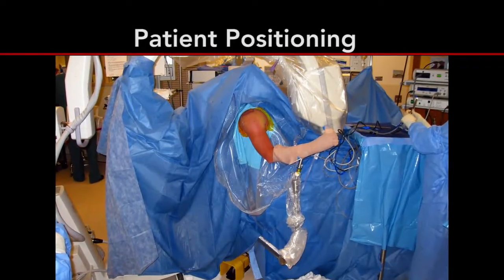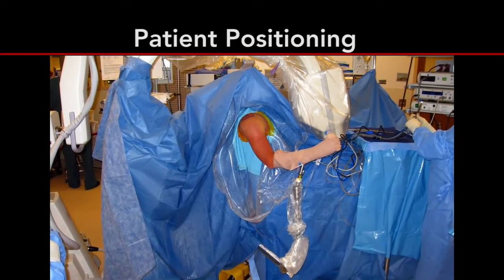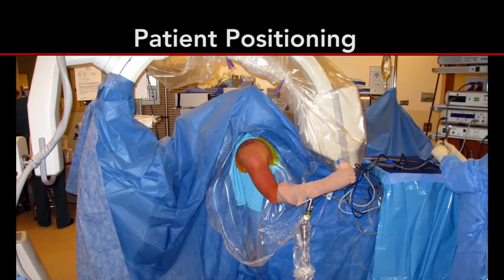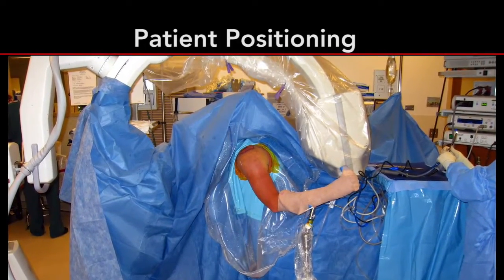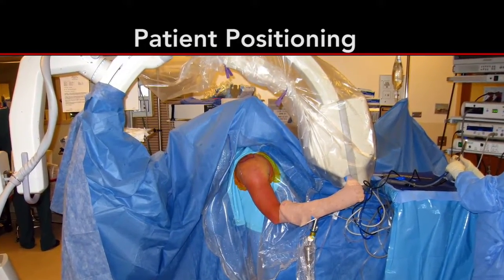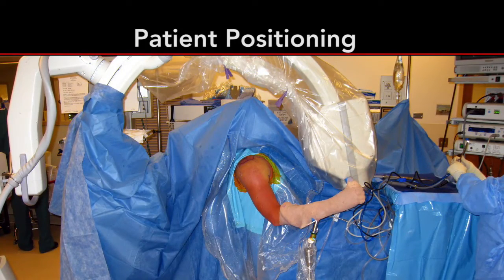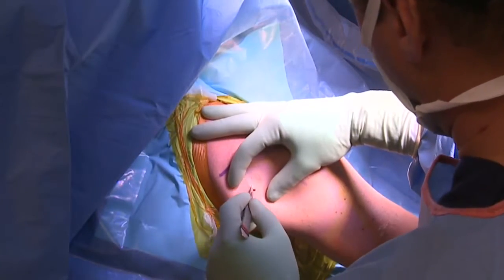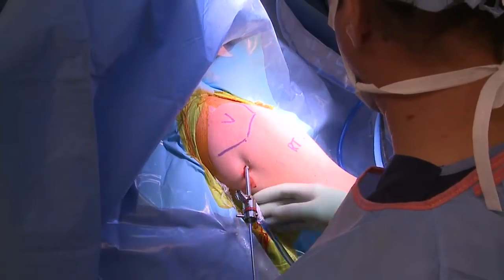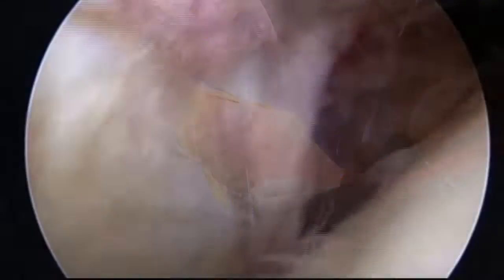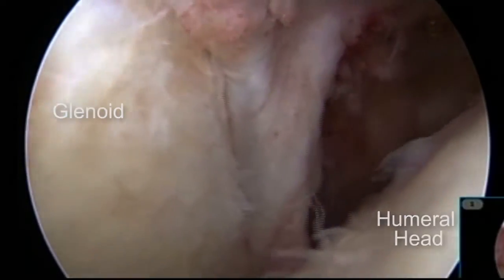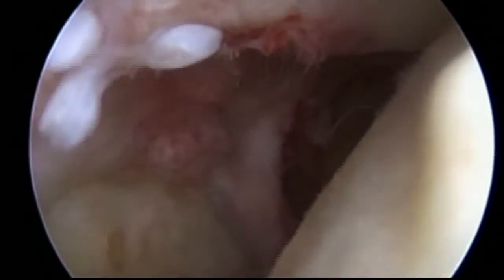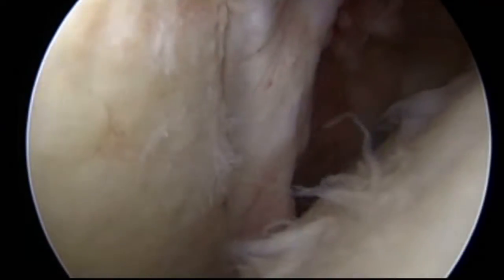The patient is placed in the beach chair position with a pneumatic arm holder. A fluoroscopic C-arm is draped into the surgical field for visualization and to aid in resection of the inferior humeral osteophyte. After establishing the standard posterior and anterior superior portals, diagnostic arthroscopy is performed, confirming end-stage osteoarthritis with degeneration of the labrum and synovitis.